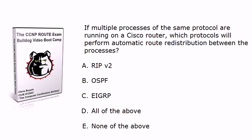If multiple processes of the same protocol are running on a Cisco router, none of these protocols — thankfully — will perform automatic route redistribution between the processes.